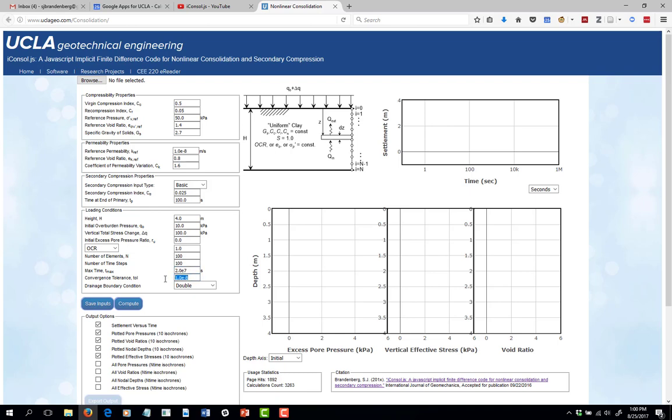Then there's a convergence tolerance. The way that the nonlinear code works is that we're using the finite difference method, using a midpoint rule, and performing Newton-Raphson iterations to make a residual term as close as possible to zero. The absolute value of the residual has to be less than this convergence tolerance in order for the program to say that that's a good solution.